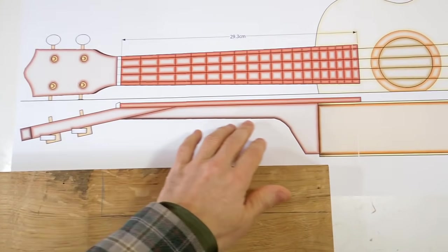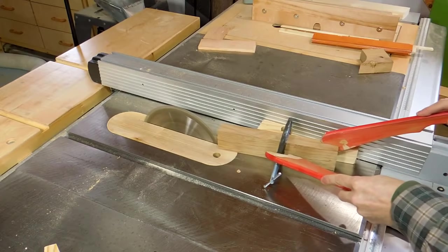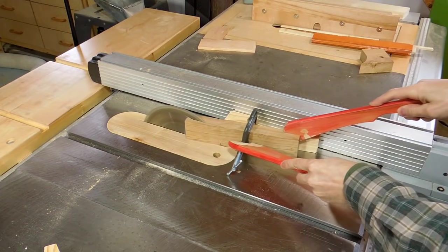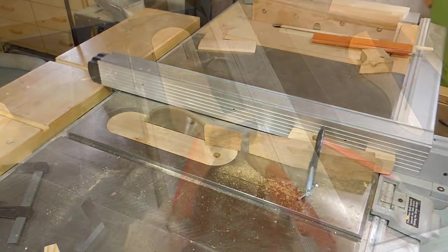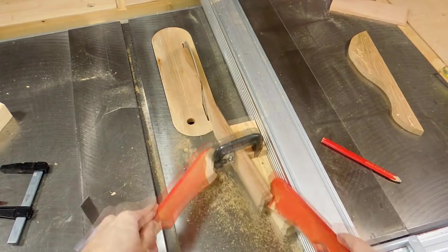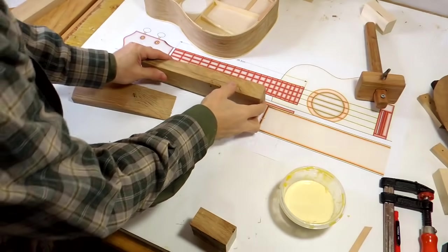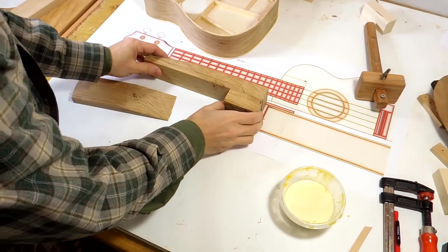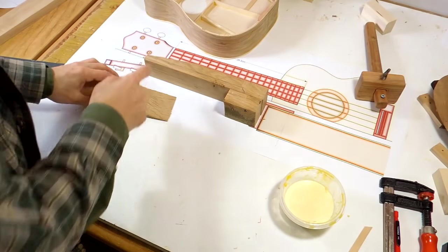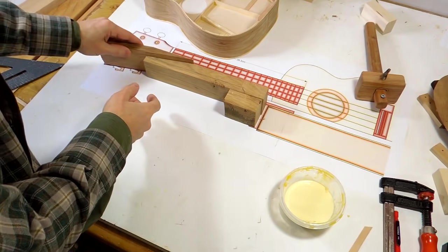So next I need to make the neck for this ukulele. And that neck is joined with a scarf joint, which is kinda tricky to cut on the table saw. So here's the neck. And this is gonna make part of the block here. I still need to cut that out here. And then this goes on here.